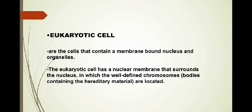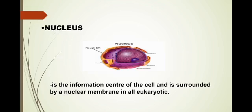When we say eukaryotic cell, they are cells that contain a membrane-bound nucleus and organelles. The eukaryotic cell has a nuclear membrane that surrounds the nucleus in which the well-defined chromosomes or the bodies containing the hereditary material are located. So there are parts of eukaryotic cell.